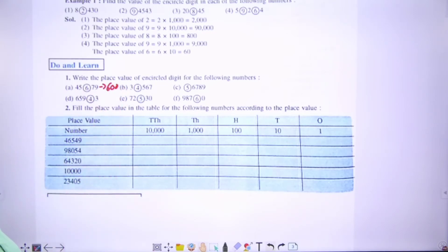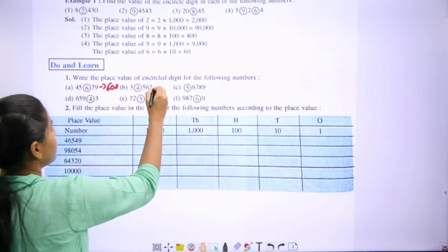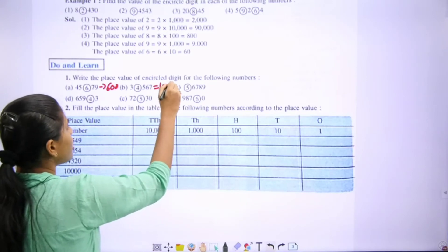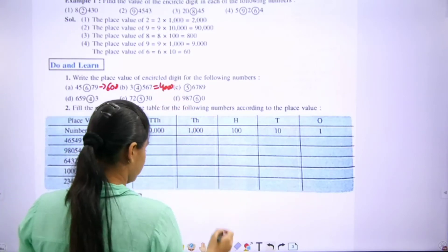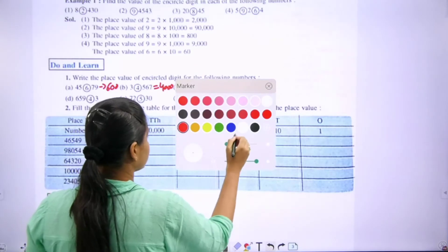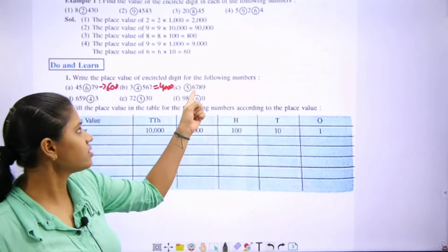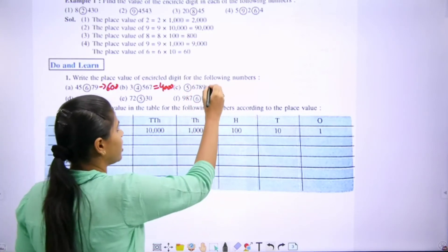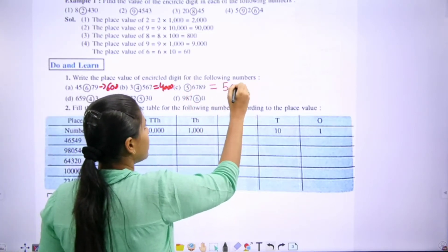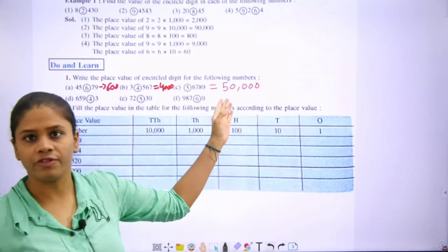Next: ones, tens, hundred, thousand — we will write here four thousand. Next: ones, tens, hundred, thousand, ten thousand — we will write here fifty thousand.